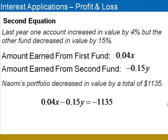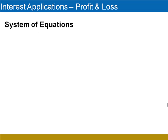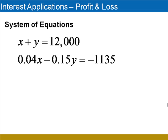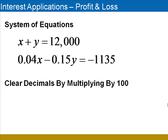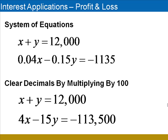We know that these two must produce a total loss of $1,135, so 0.04X minus 0.15Y equals negative 1,135 will be our second equation in the system. To solve this system of equations, we'll begin by clearing the second equation of decimals. This can be done by multiplying both sides of the equation by 100.